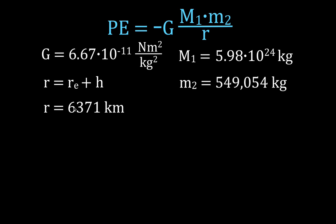Since the rocket is sitting on the surface of the Earth, the distance between the two objects — really the distance between the centers of mass — is just the radius of the Earth, the distance from the center of the Earth to the rocket, which is 6,371 kilometers. The important thing to remember is that this is not zero. We're going to launch this rocket into space where g is not constant at 9.81 meters per second squared, so we have to use this equation, not PE equals MGH. We just plug the values in — it's pretty straightforward.